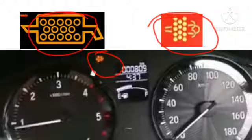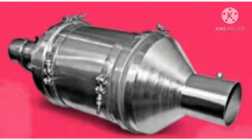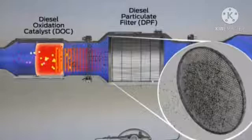If we ignore that warning light and continue running, it can damage the DPF filter, which costs above 80,000. So let's come to the point — the regeneration process means burning off the soot particles.